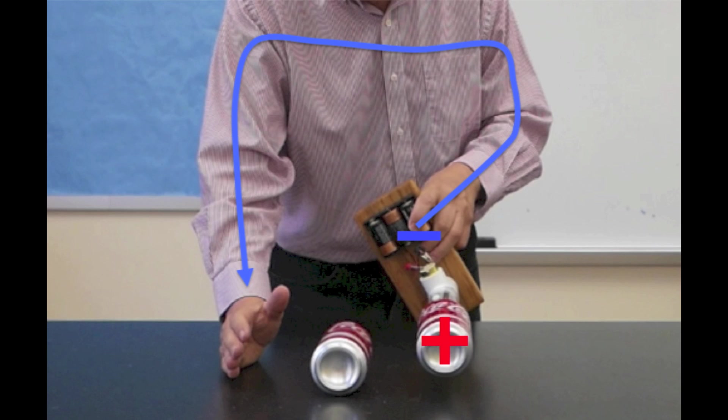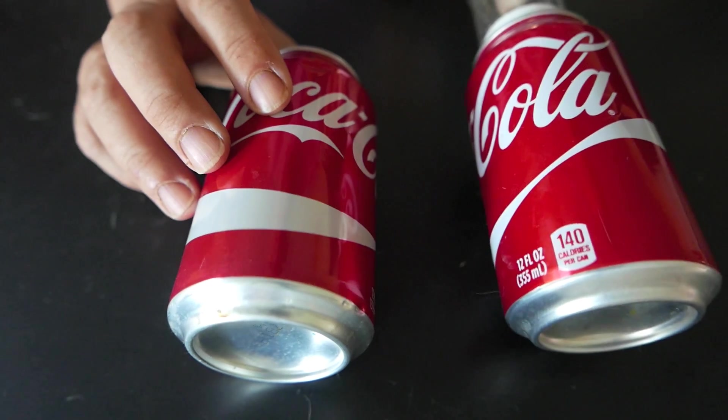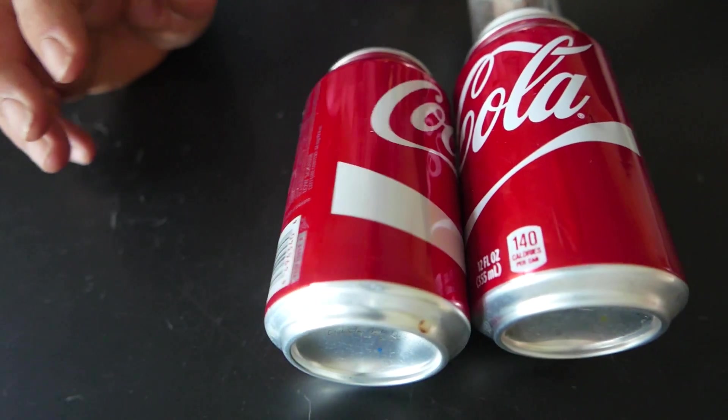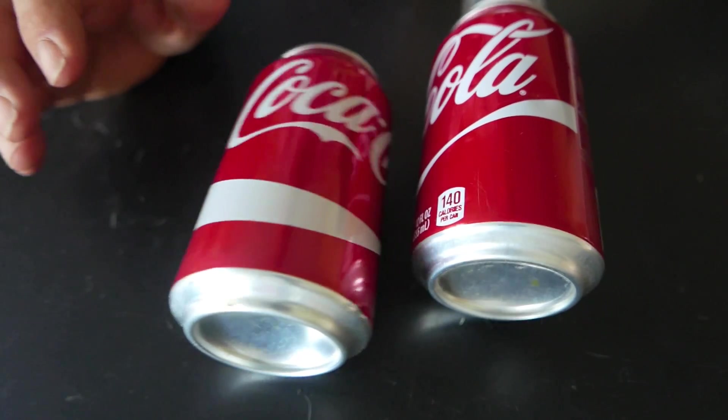If I hold it at the base I can gain back the electrons that the can took away from my hand. We can actually see small sparks from the transfer of electrons.